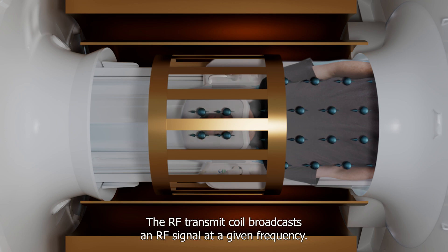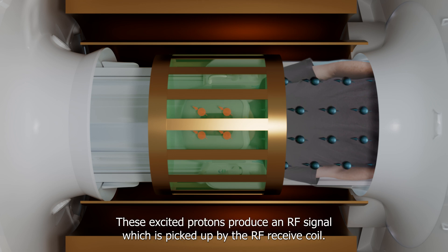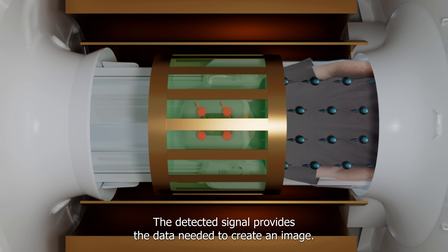The RF transmit coil broadcasts an RF signal at a given frequency. This is known as the resonance frequency. The targeted protons absorb the RF energy. These excited protons produce an RF signal which is picked up by the RF receive coil. The detected signal provides the data needed to create an image.